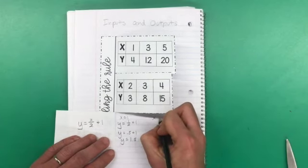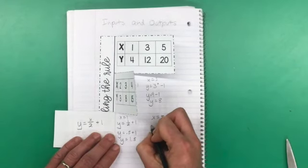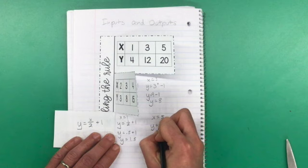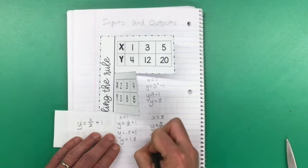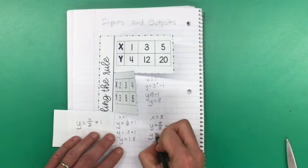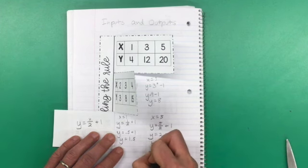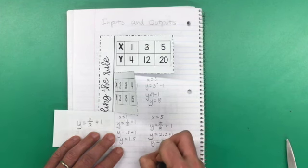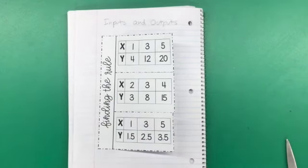And it also works when we have x equals 5. So y would equal 5 divided by 2 plus 1. What is 5 divided by 2? 5 divided by 2 is 2 and a half, or 2.5 plus 1 would mean that y is 3.5. And there you have it.